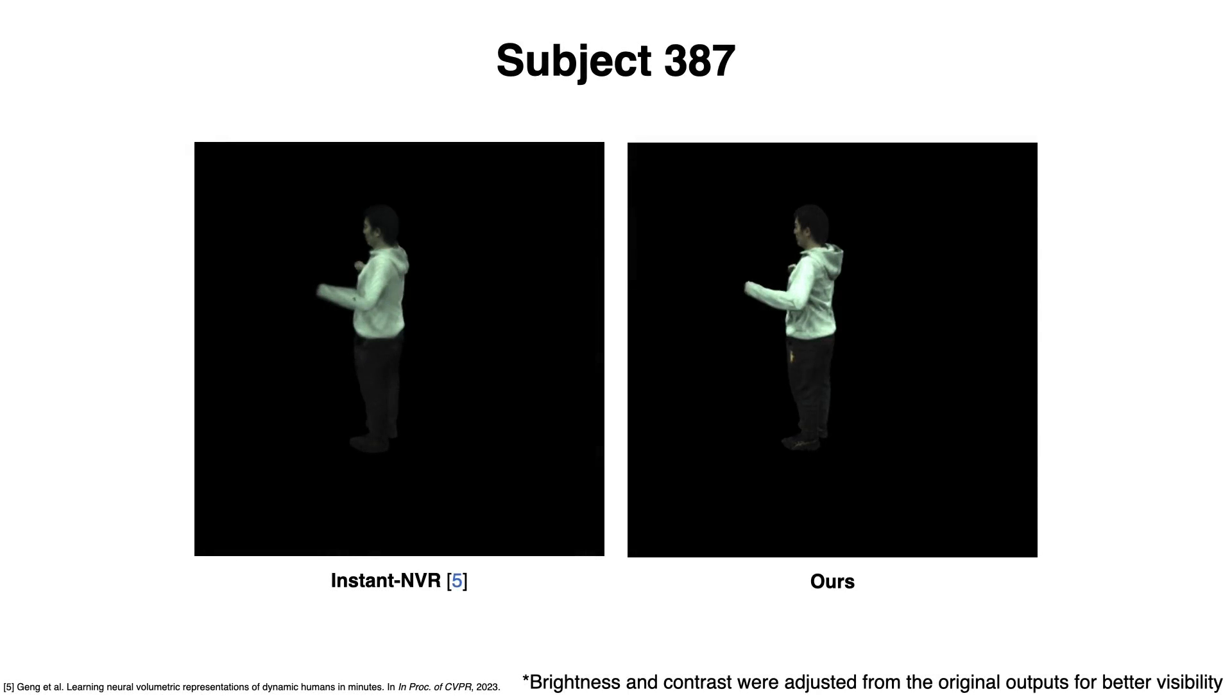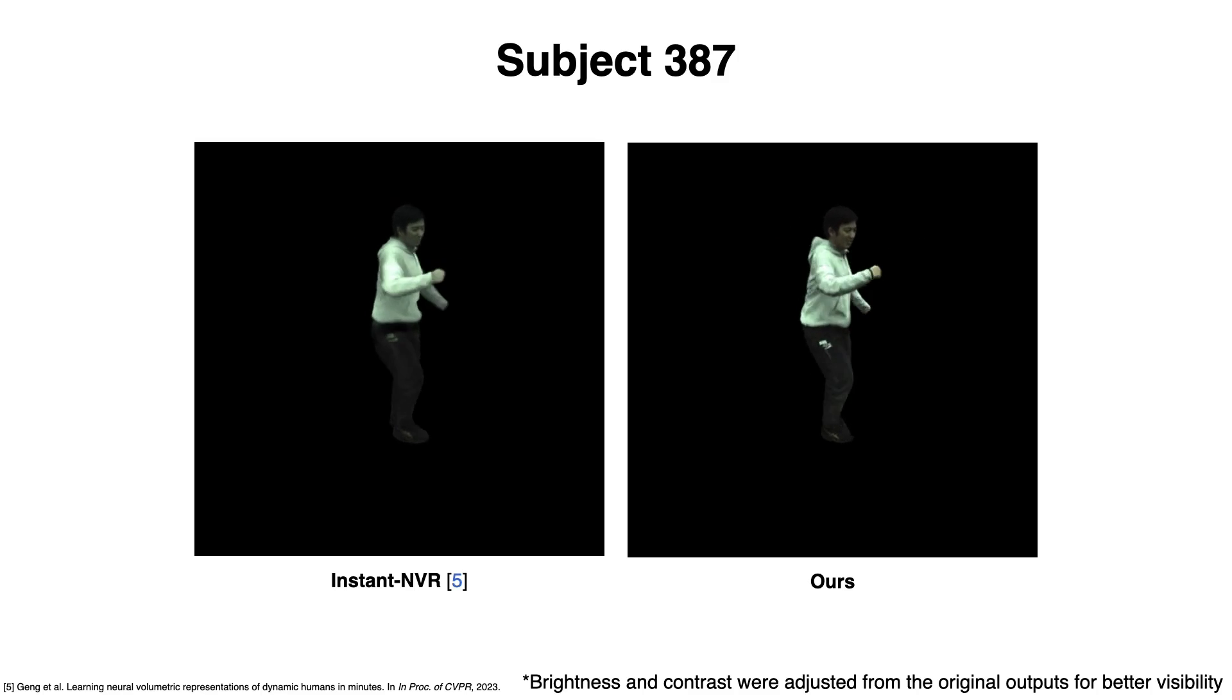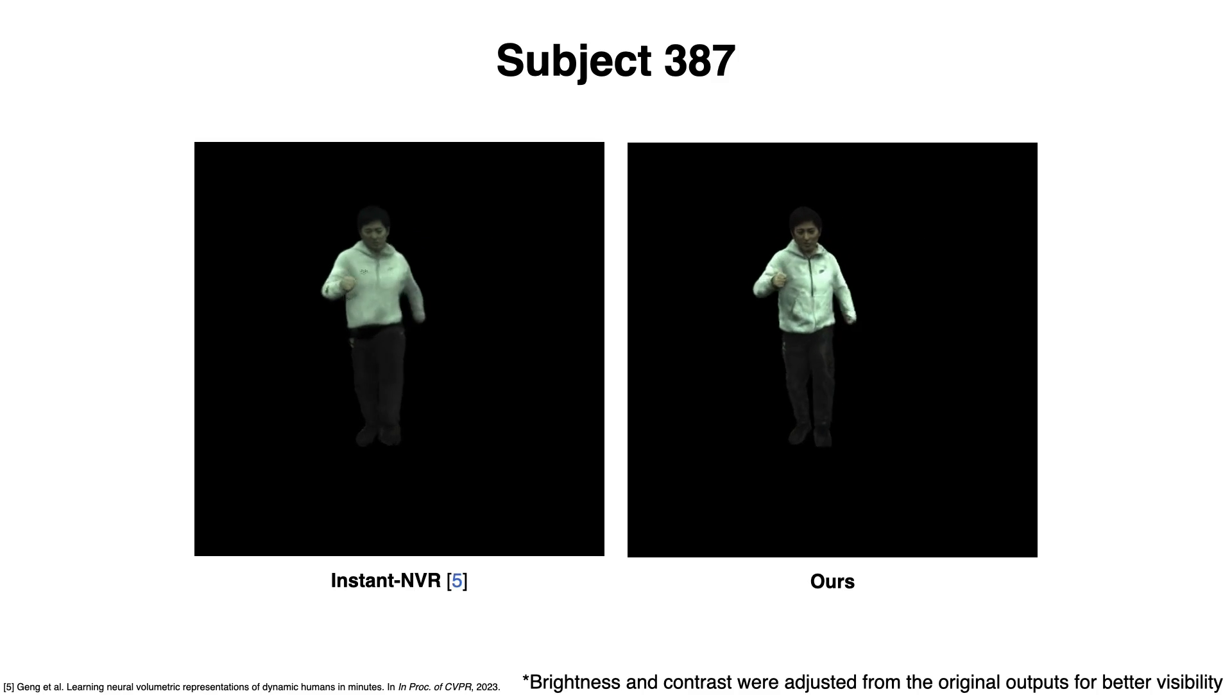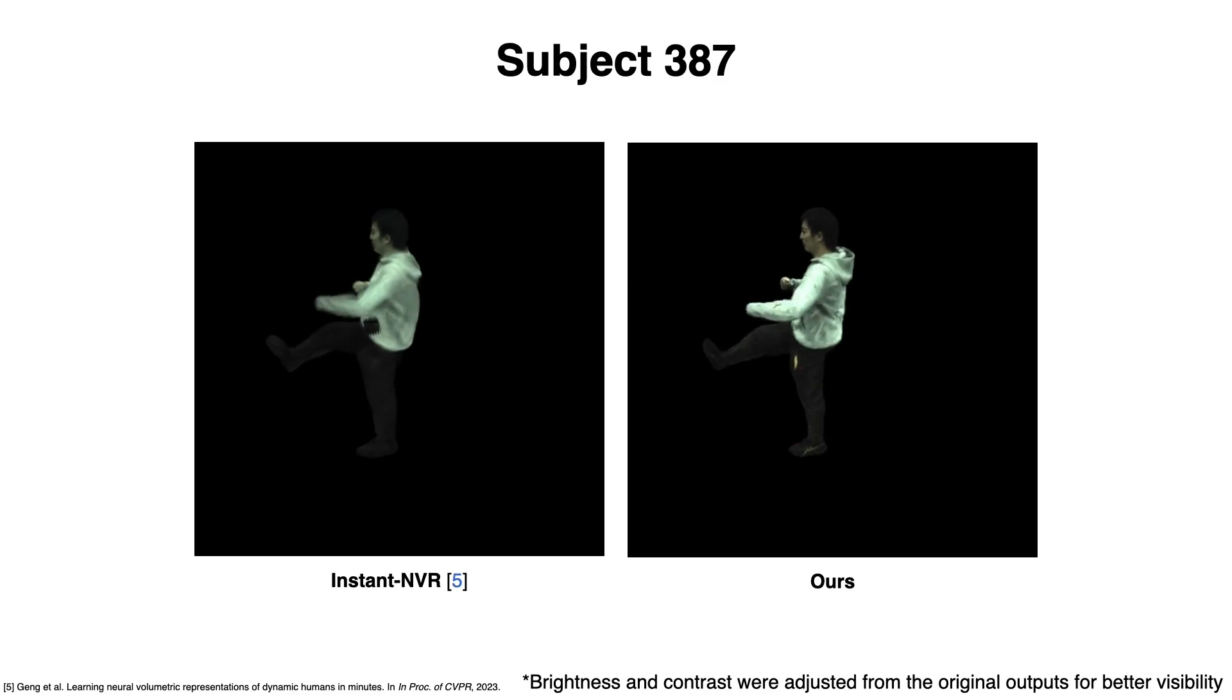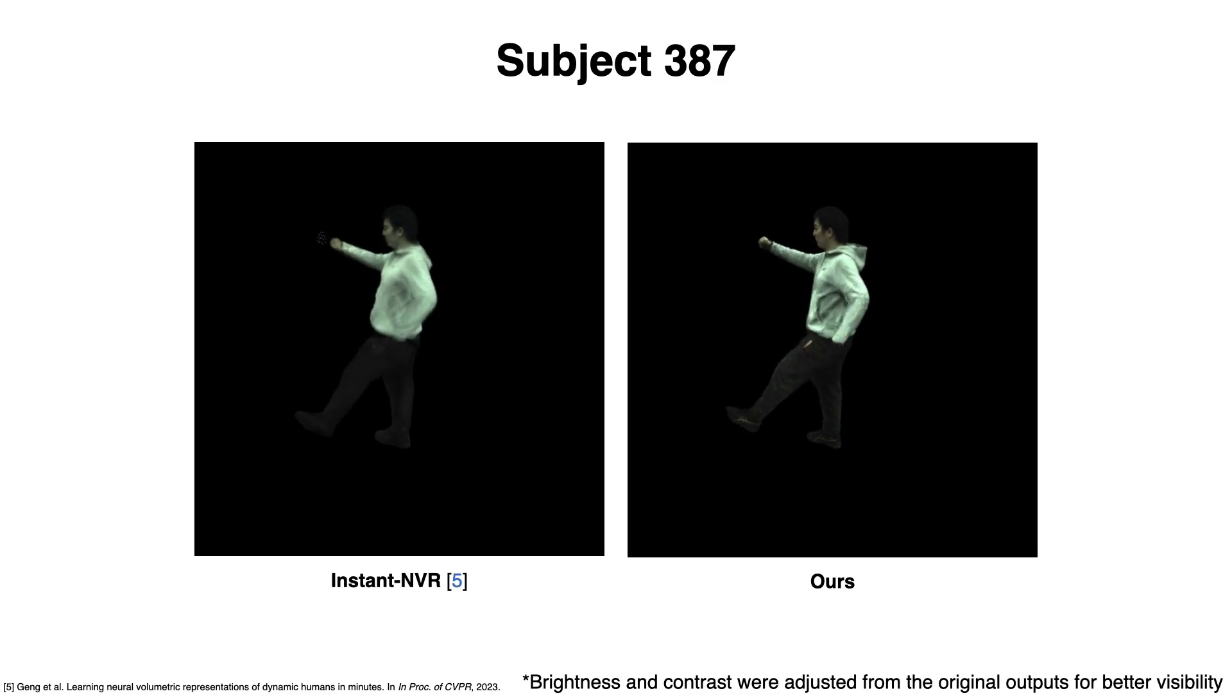We first show our novel view synthesis results on ZJU-MoCap, evaluated on the camera furthest from the training camera. Despite its short training time, Instant NVR produces overly smooth texture and generates obvious artifacts on the limbs. In contrast, our method can synthesize realistic cloth deformation and preserve high-level details.